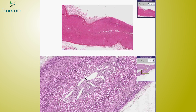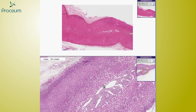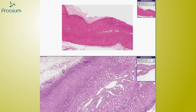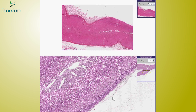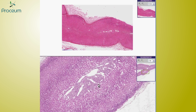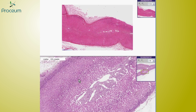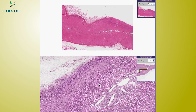Here is a structure on the bottom that is quite normal. You can recognize it as an adrenal gland. Here is fat surrounding the adrenal cortex and capsule on this side, and here in the center is the adrenal medulla.